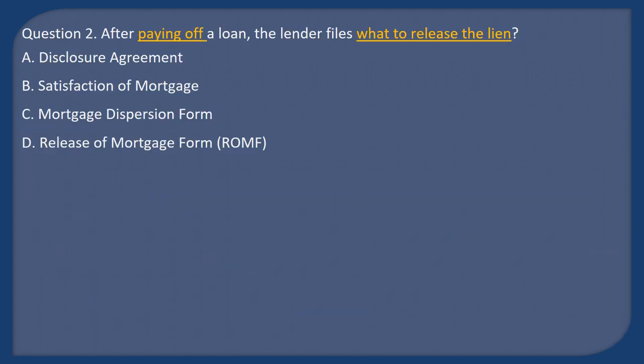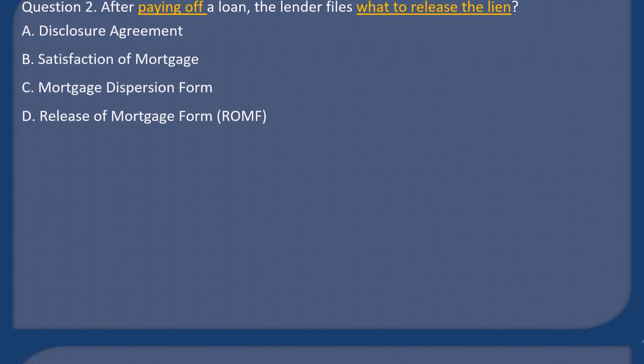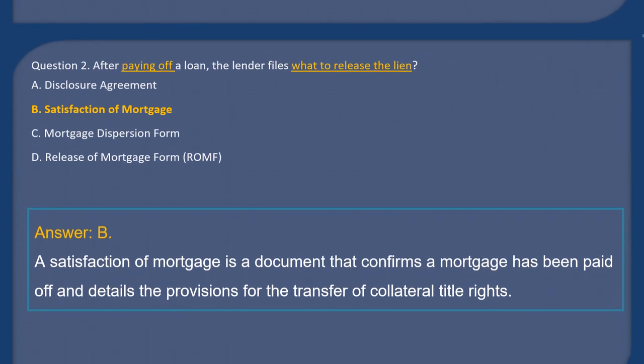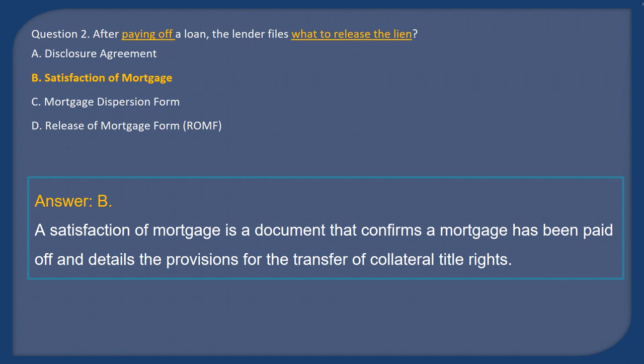Question 2: After paying off a loan, the lender files what to release the lien? A) Disclosure agreement, B) Satisfaction of mortgage, C) Mortgage dispersion form, D) Release of mortgage form (ROMF). Answer: B. A satisfaction of mortgage is a document that confirms a mortgage has been paid off and details the provisions for the transfer of collateral title rights.